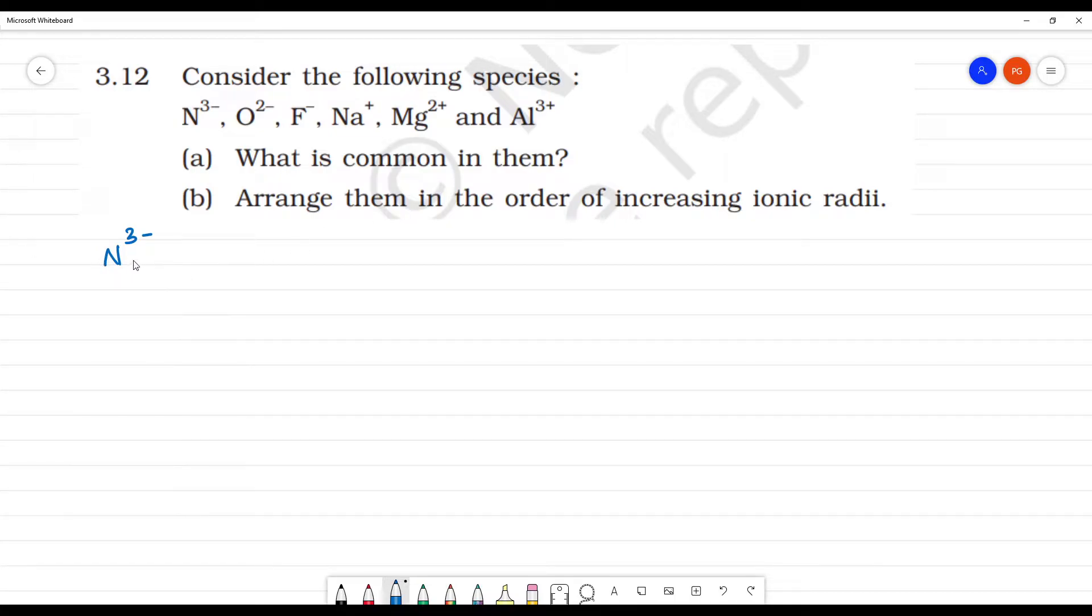Starting with N³⁻. Nitrogen is atomic number 7. So N³⁻ means 7 plus 3 electrons. That equals 10 electrons.